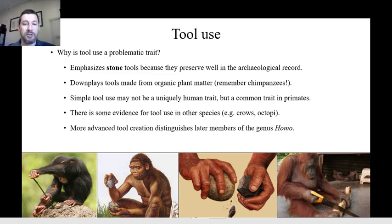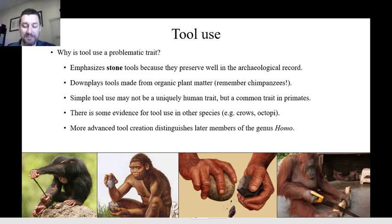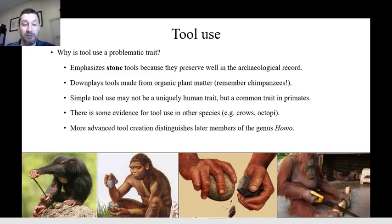Another trait we use to distinguish the human lineage is tool use — using objects that are not part of your body to do things. The classic example in the human lineage is the creation of stone tools used to chop and bash things, and then eventually to make more complicated tools like arrowheads or spear points. This can be problematic as a marker though. We're only looking at stone tools because stone tools preserve really well in the archaeological record — a stone doesn't decay, and they can sit around for a million years and be essentially unchanged.